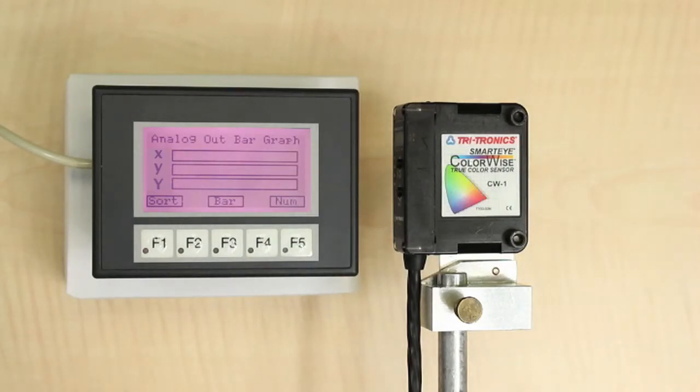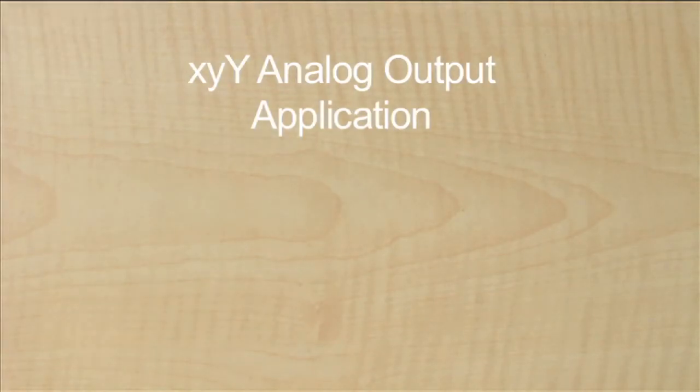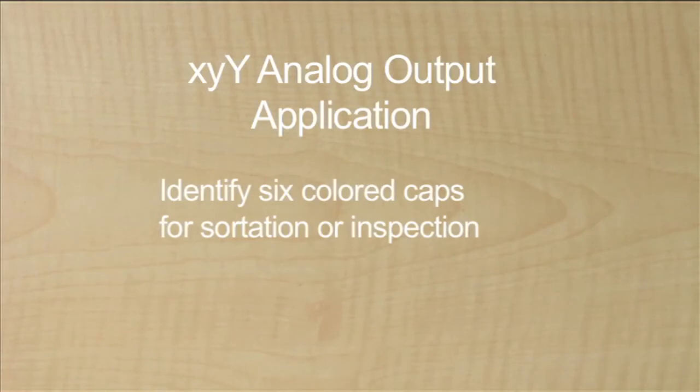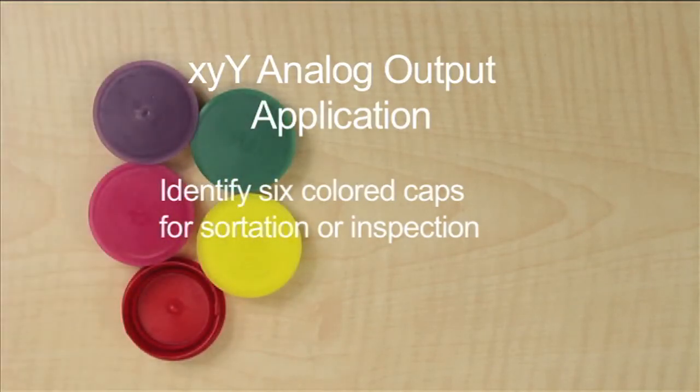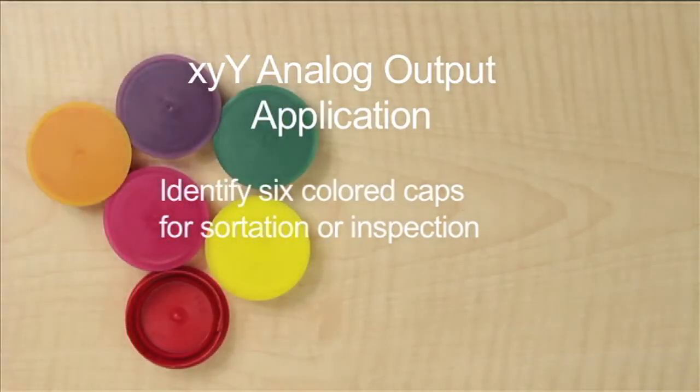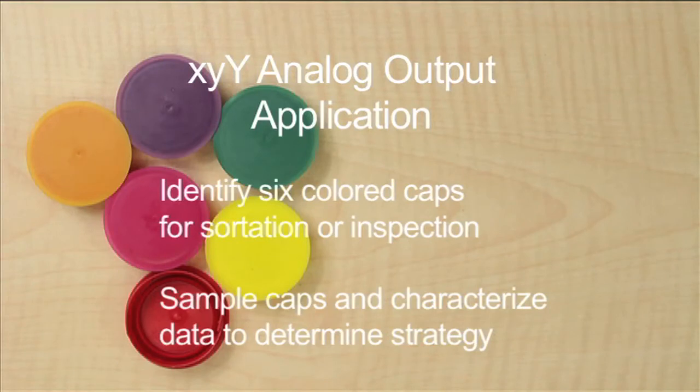Let's take a look at how to apply the ColorWise XYY type analog outputs to a real application. The application is to identify each of these six colored caps for purposes of sortation or inspection, using the ColorWise sensor's analog outputs in XYY mode. Step one is always to understand the problem. In this case, to characterize the analog output data to see what the data in this application looks like.